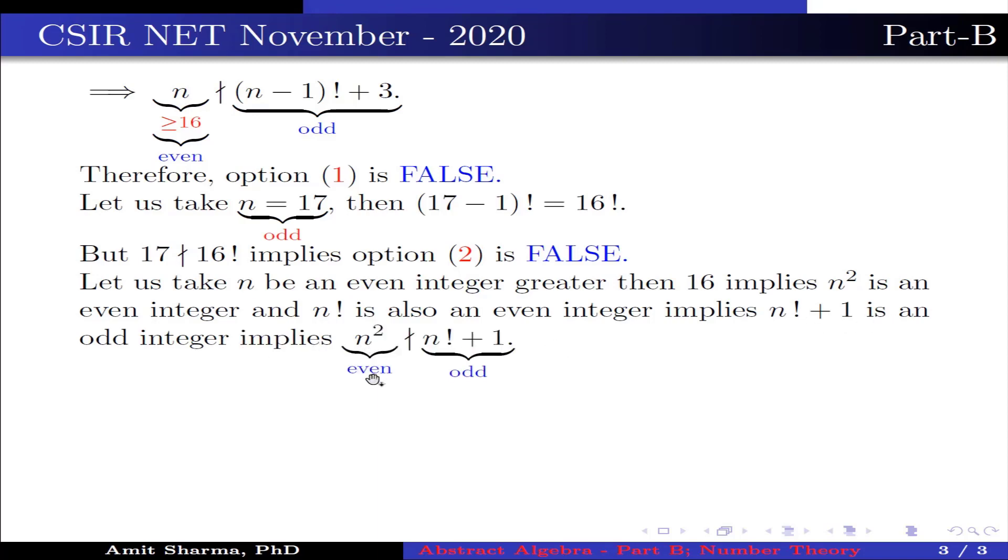This implies n² which is even does not divide n! + 1 which is an odd integer. Therefore option 4 is false.